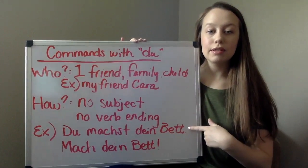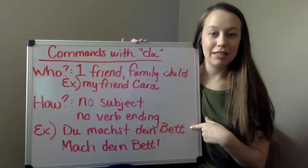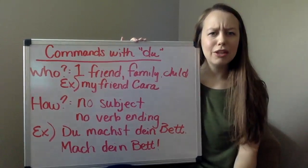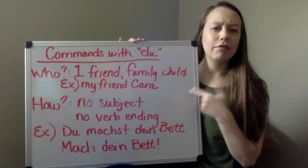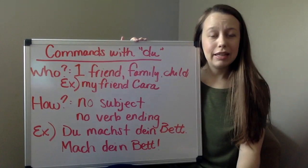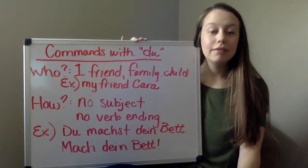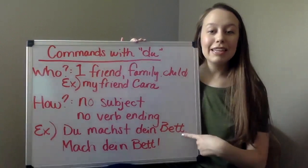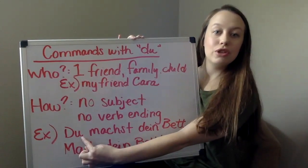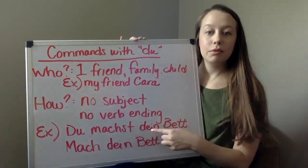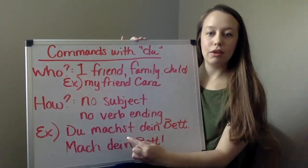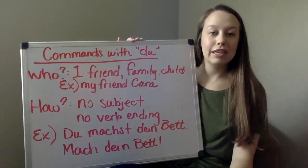So here's an example sentence: 'Du machst dein Bett' — that's just a statement, like 'you make your bed.' But maybe I go to my friend Kara's house and she hasn't made her bed, and I want to order her to make it. So I say: 'Mach dein Bett' — make your bed. Notice I took off the 'du' — no subject — and I took off the '-st' from the verb. No subject, and no verb ending. That's how we make 'du' commands.